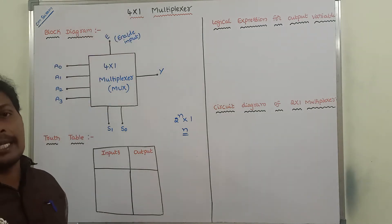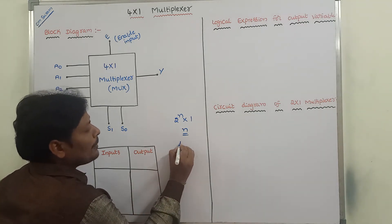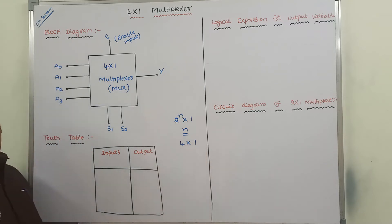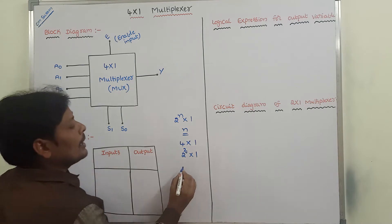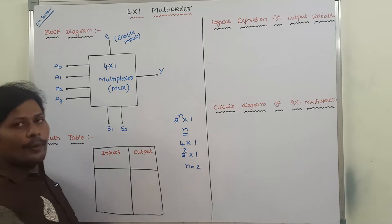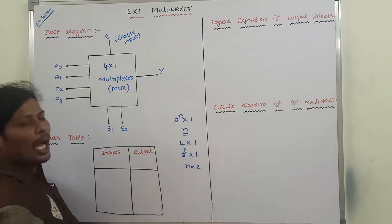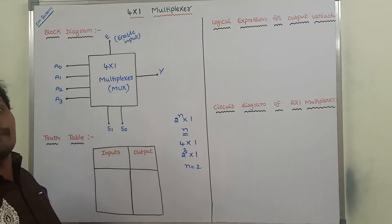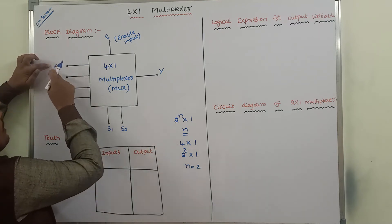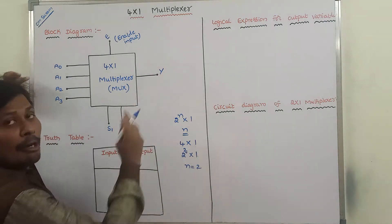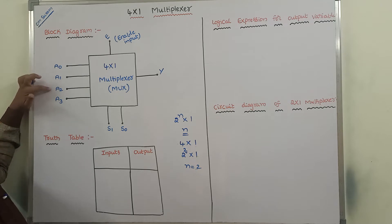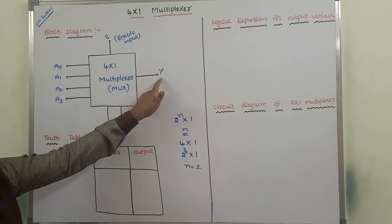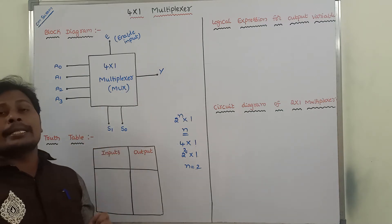The 4x1 multiplexer can take 4 inputs and produce only one output. This 4 can be written as 2^2, so in the power place 2 is there. Therefore, the number of selection lines is equal to 2. So: 4 inputs, 2 selection lines, and 1 output. The block diagram shows 4 inputs A0, A1, A2, A3, one output Y, and two selection lines S1 and S0.